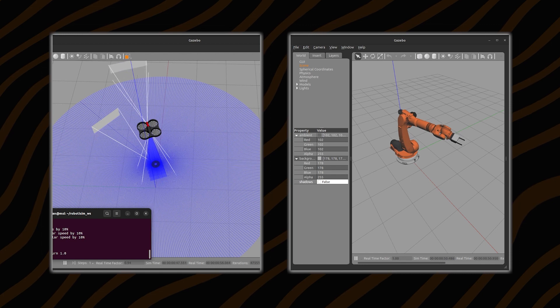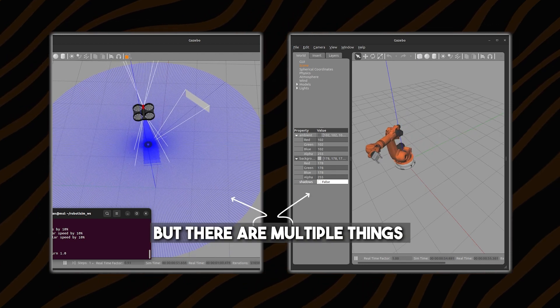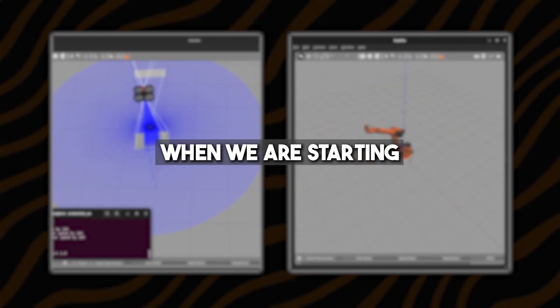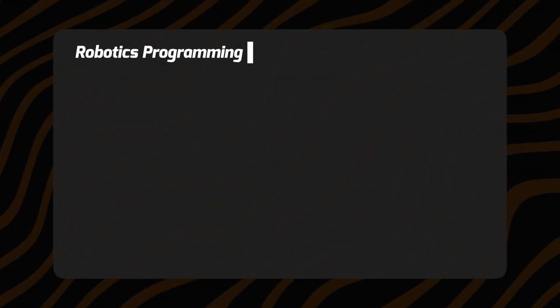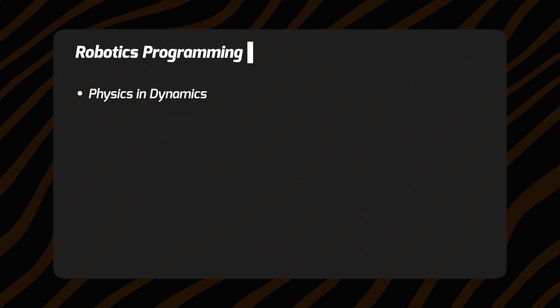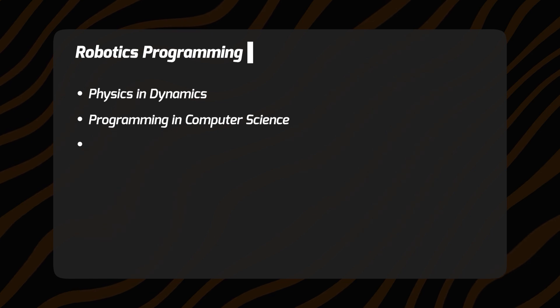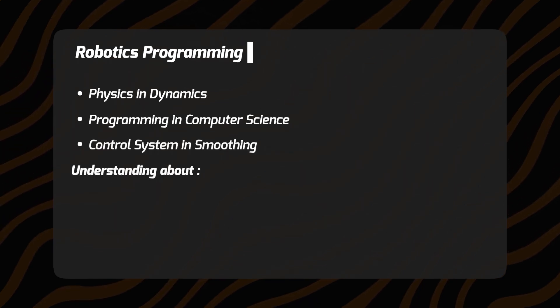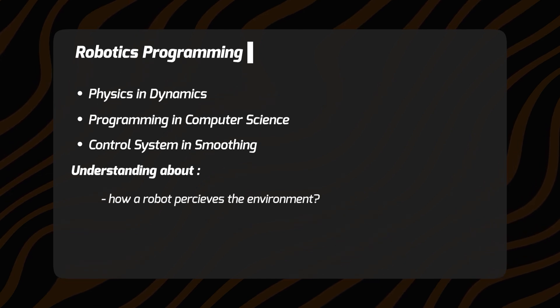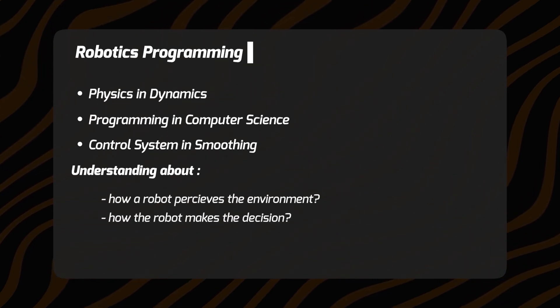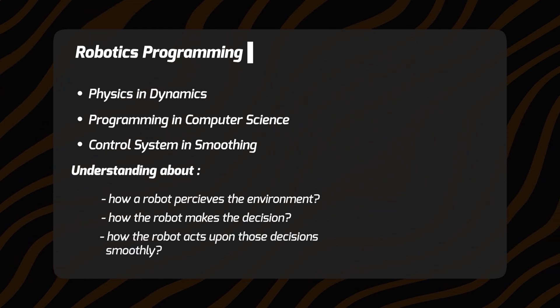When we look at a robot in three-dimensional space — the Unorum Robotica — we look at its smooth motion, but there are multiple things involved in it. What should we focus on when we are starting? In my opinion, it's programming. My name is Muhammad Lukman, and we will be looking into the programming part of robotics as we start our learning journey and develop our career in robotics. Robotics programming is a symphony of physics and dynamics, programming and computer science, and control systems. In a bigger picture, it's understanding how a robot perceives the environment, how it makes decisions, and then acts upon those decisions smoothly.